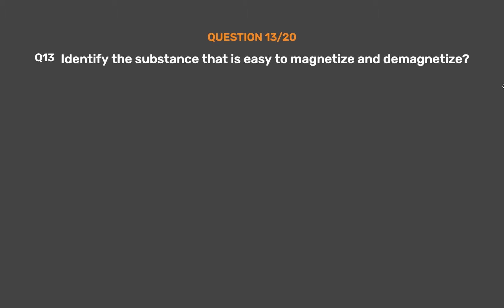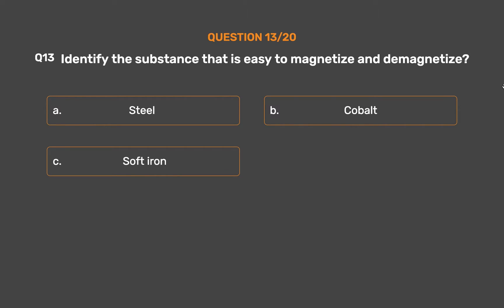Question number 13. Identify the substance that is easy to magnetize and demagnetize. Option A: Steel. Option B: Cobalt. Option C: Soft iron. Option D: Alnico.